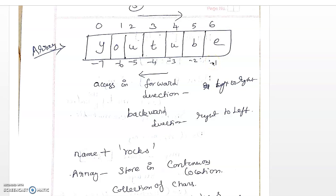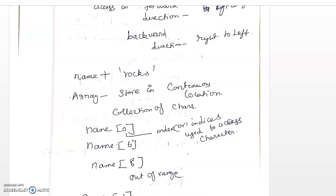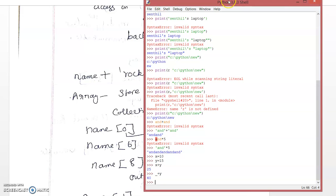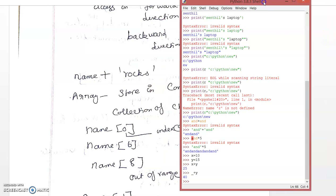Python allows you to access the string in the backward direction also. In the backward direction, the index starts from minus 1, minus 2, and so on — meaning right to left. I am going to demonstrate each of these things. Here I am adding a variable with some strings. Let's see the output.